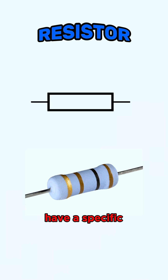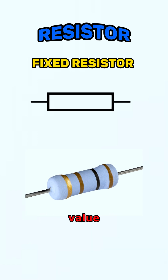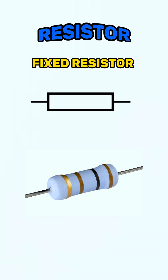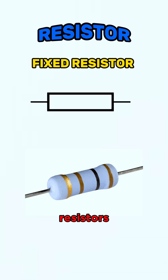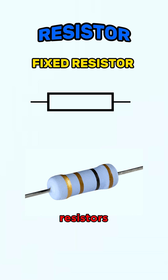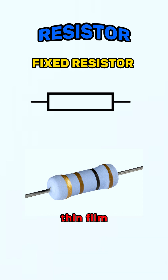Fixed resistors have a specific value and you cannot change these values. There are different types of fixed resistors: carbon composition resistors, wire wound resistors, thin film resistors, and thick film resistors.